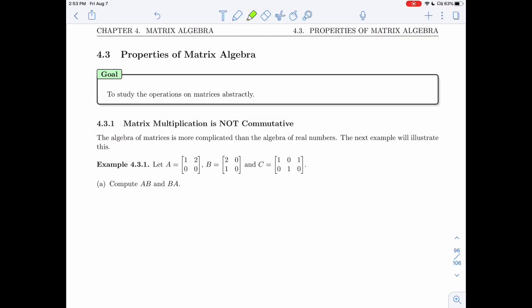We are now ready for section 4.3. We've defined the product, the sum, and scalar multiplication of matrices. Now we're ready to study their properties. So we'll study the operations on matrices abstractly.